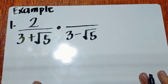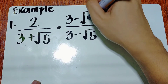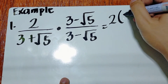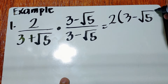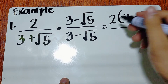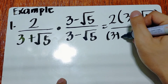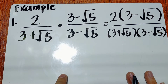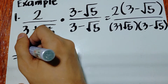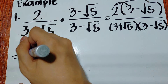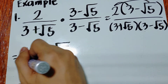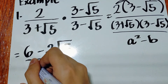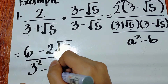So now we have our multiplier. Copy the original fraction on top, then multiply. Since 2 times (3 minus square root of 5) needs distribution, and the denominator becomes 3 plus square root of 5 times the quantity 3 minus square root of 5. Distributing the numerator gives 6 minus 2 square root of 5. The denominator is a squared minus b, which is 3 squared minus 5.